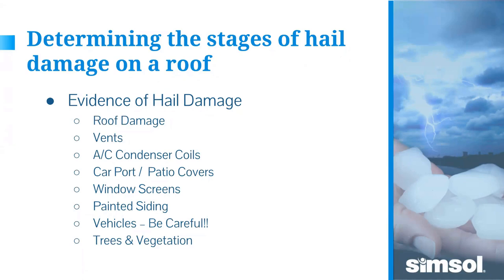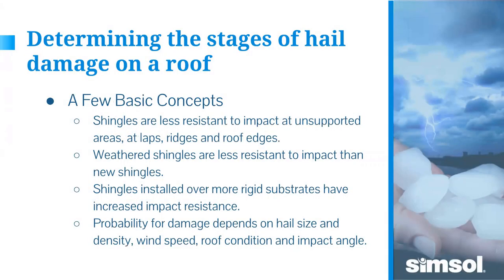Depending on how quickly you get to the site after the storm, trees and vegetation can play a role. Broad-leaf trees like maples, palm fronds, and similar vegetation catch a lot of hail and can be destroyed by a storm. If you get there within a week it should be pretty obvious, but if it's six months to a year later, everything's regrown and looks fine again.